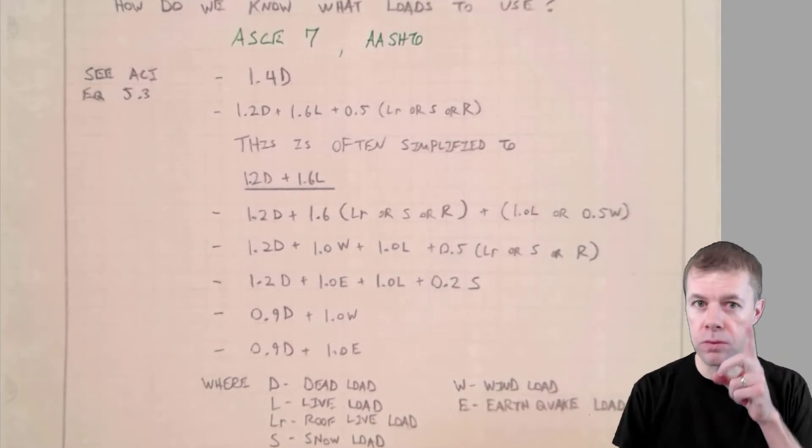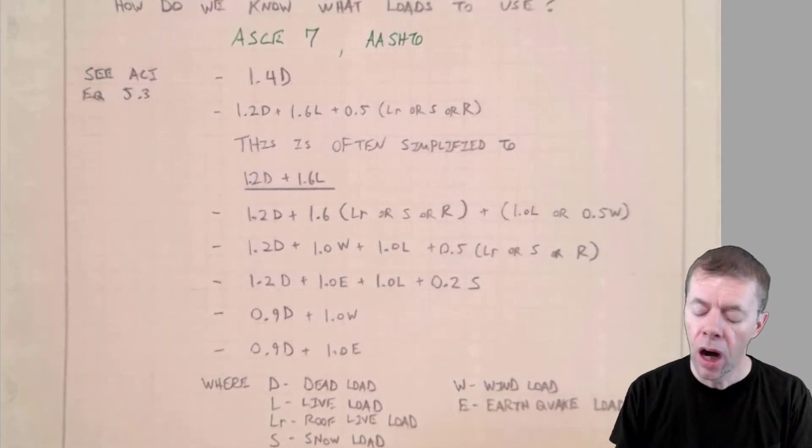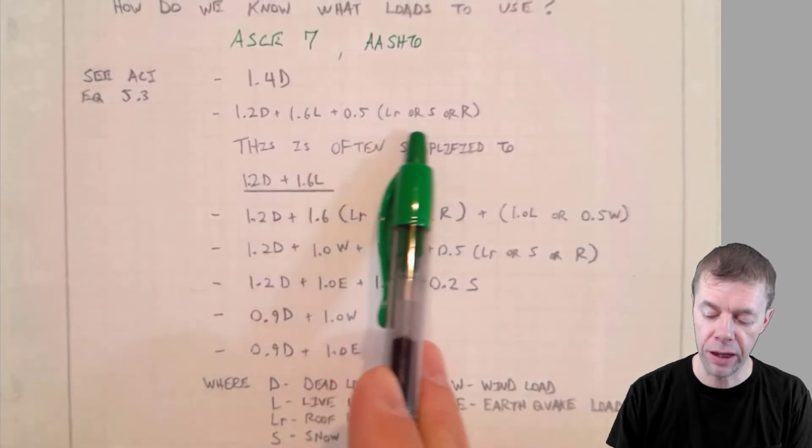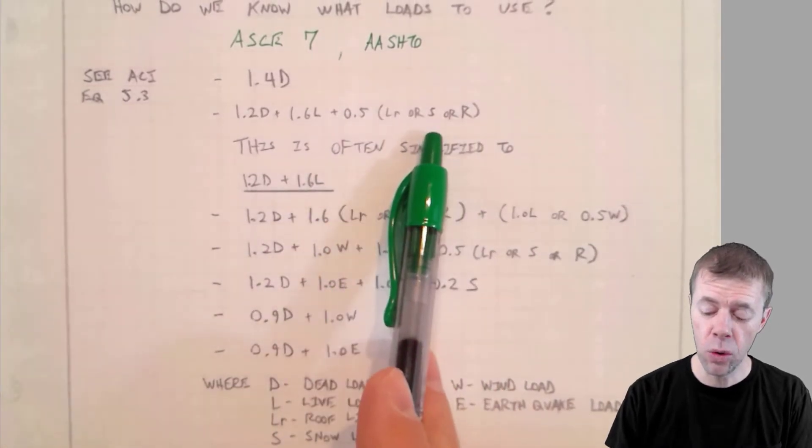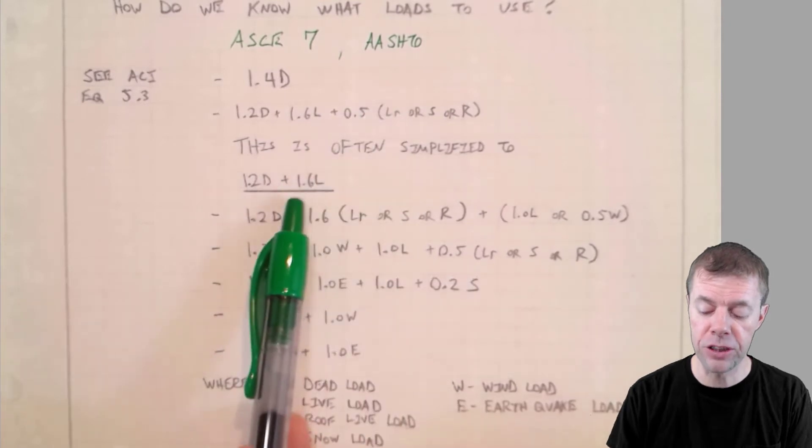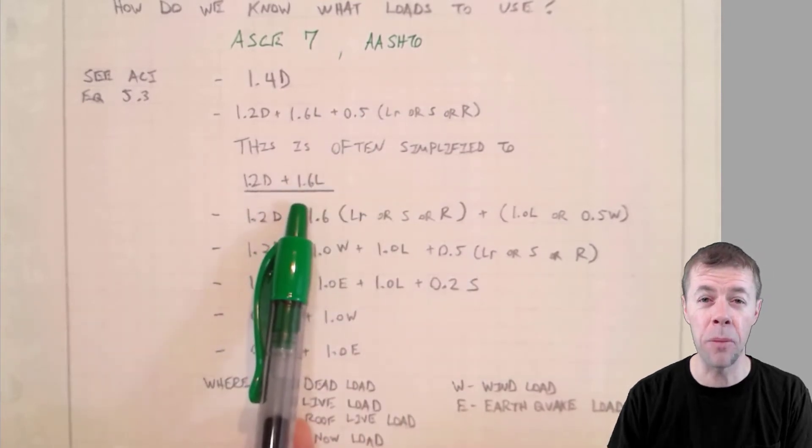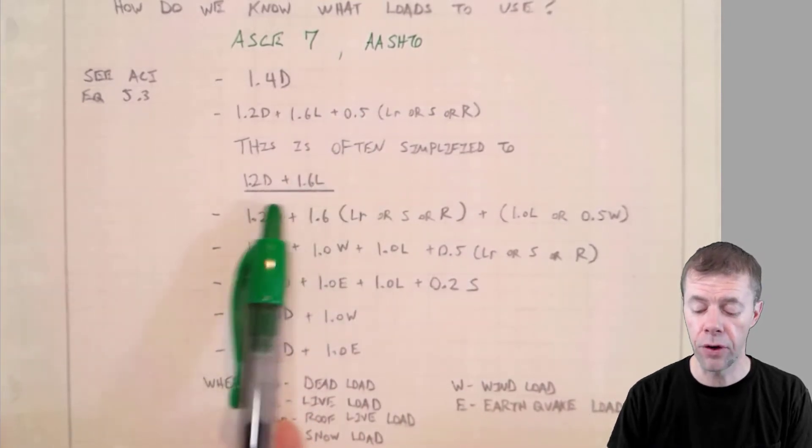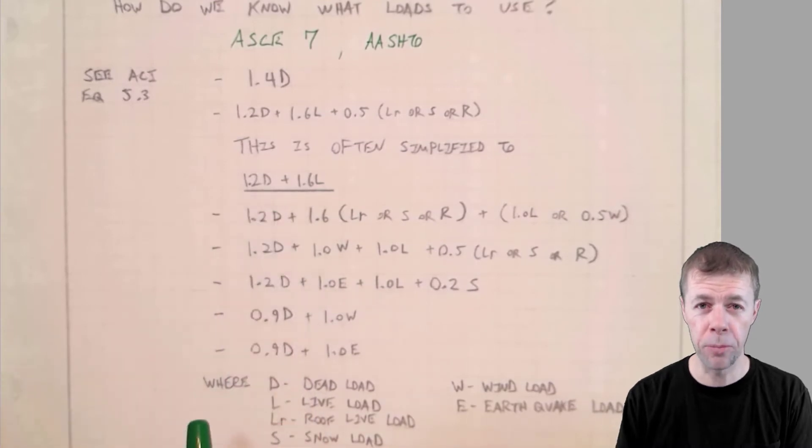How is that okay? Well, let's keep going. Oftentimes, we don't have these things, unless you're designing a roof. So these will actually go away. And this will simplify just to this. And this is a very, very common load factor. These two together 1.2 times dead, plus 1.6 times live.